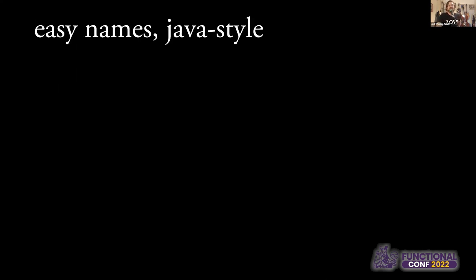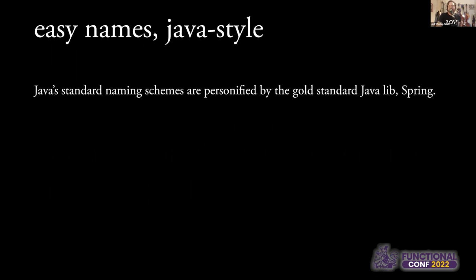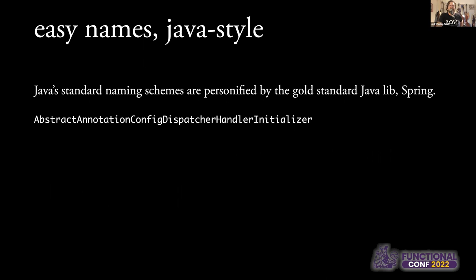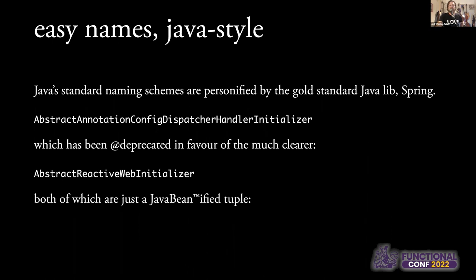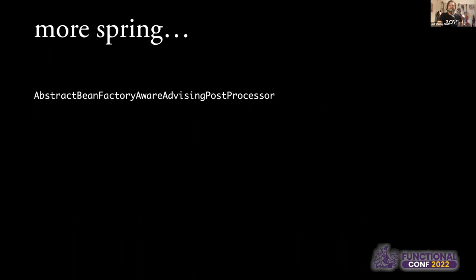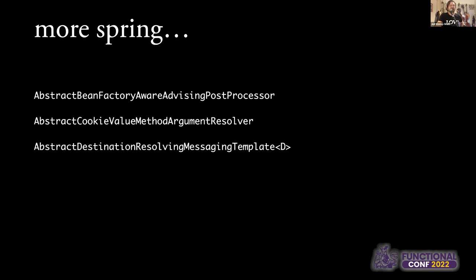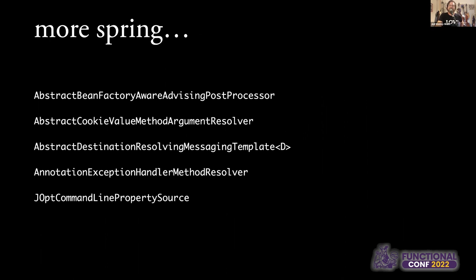Java loves a good name, and Spring has some of the best things, like AbstractAnnotationConfigDispatcherHandlerInitializer, which of course clearly tells you everything about what it does. It's actually been renamed to AbstractReactiveWebInitializer. And really, it's just a Java-beanified tuple of application context and a class array. And these are all real Spring names that you clearly know everything about just from the name.